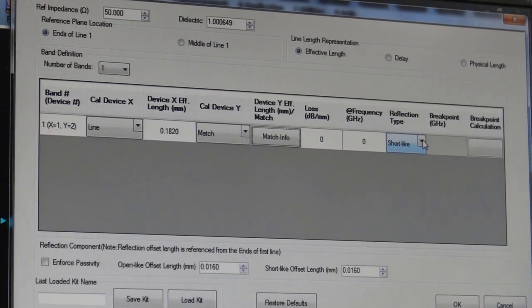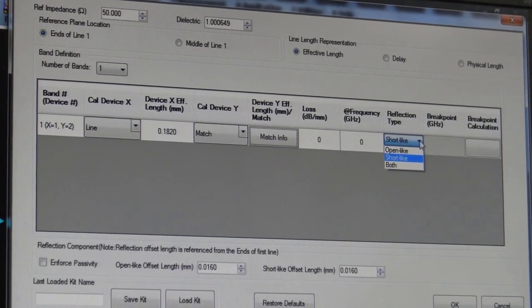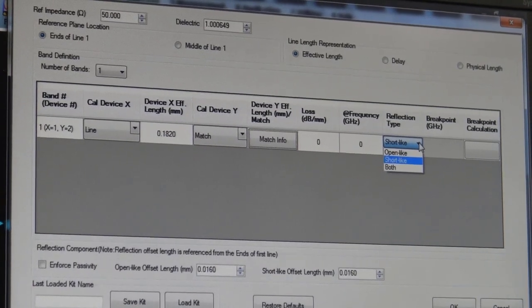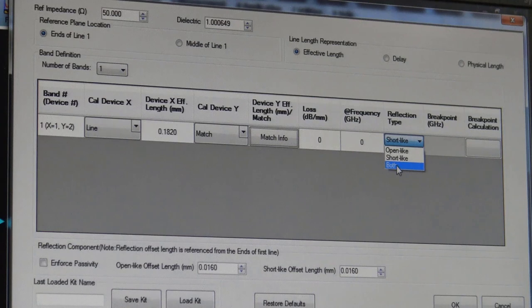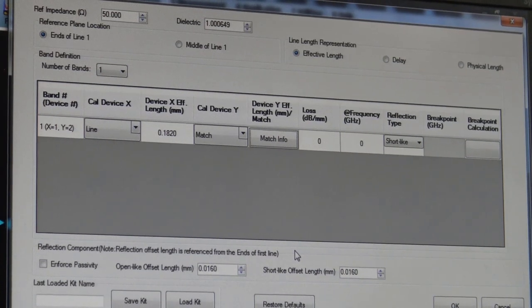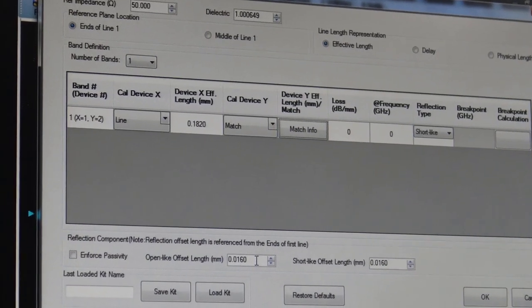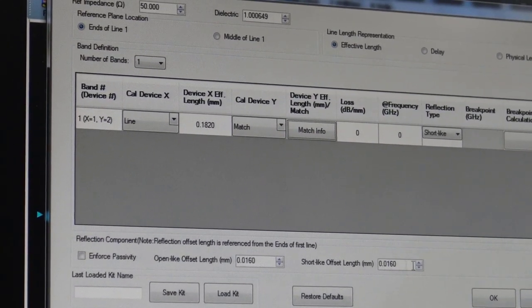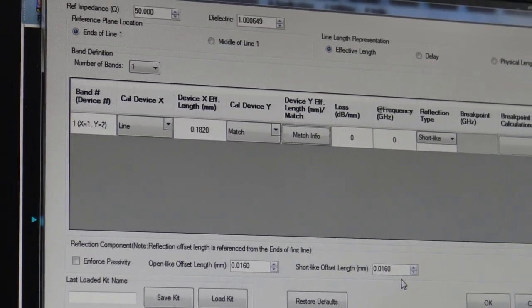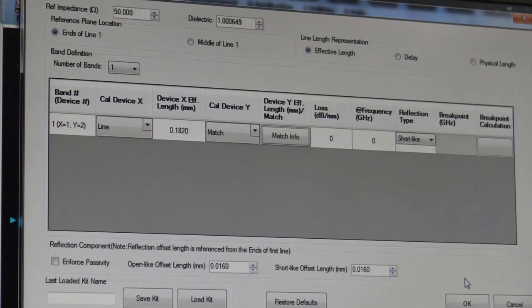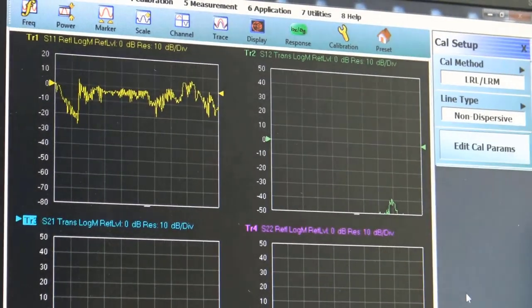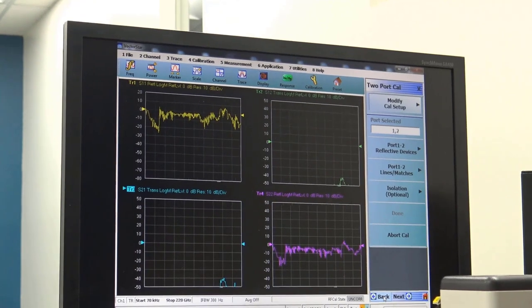We just now want to determine what type of reflect that we're going to use, either an open or a short. It doesn't have to be perfect. It's just an open like or short like. You can also include both. So you can include two different reflection types. That's our advanced LRM capability. In this case, we'll just be doing the short. Now to finalize the description of the standards we're using, we can enter the offset lengths for the open and the short. In this case, it's 16 micron length to the shorts and the opens. And that's what's entered here. So now we're set up. We have all the information we need that defines this calibration substrate. We'll click OK, and then go back to our calibration menu.